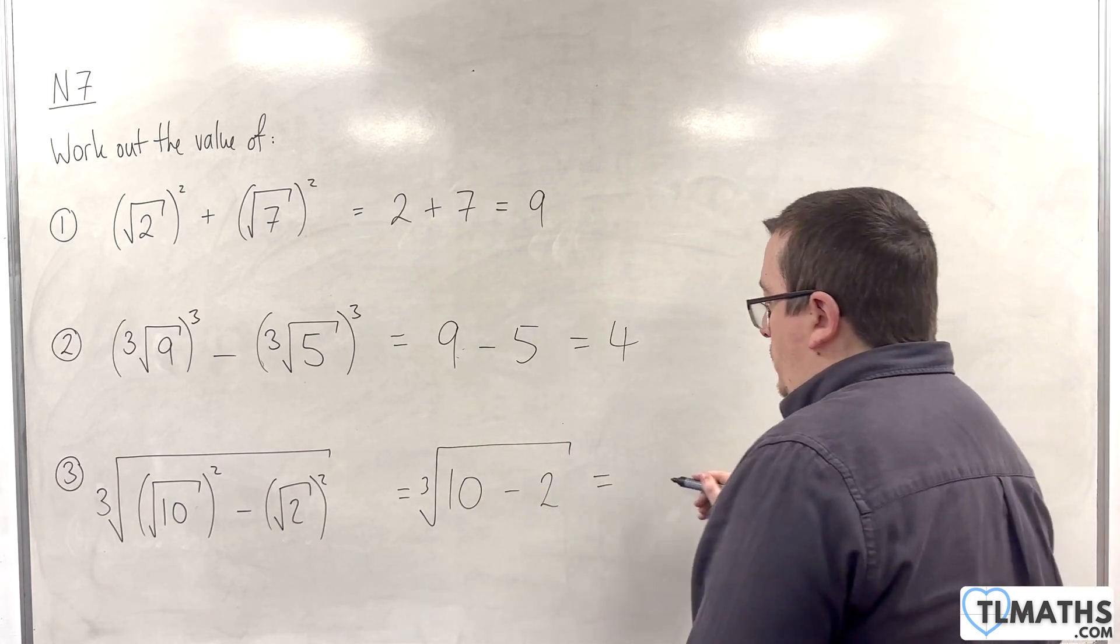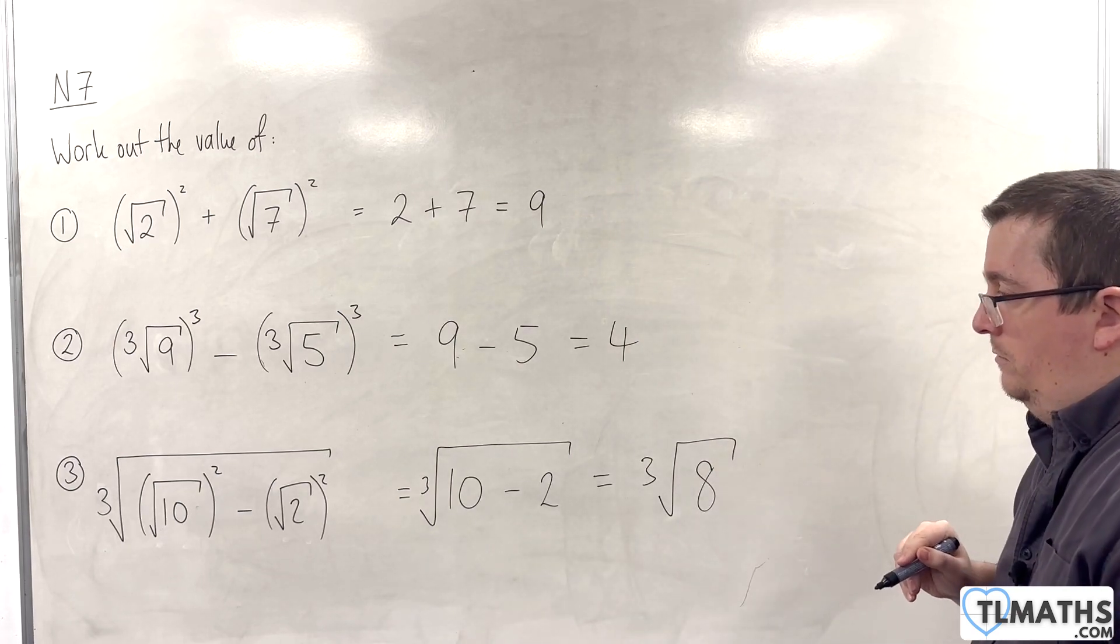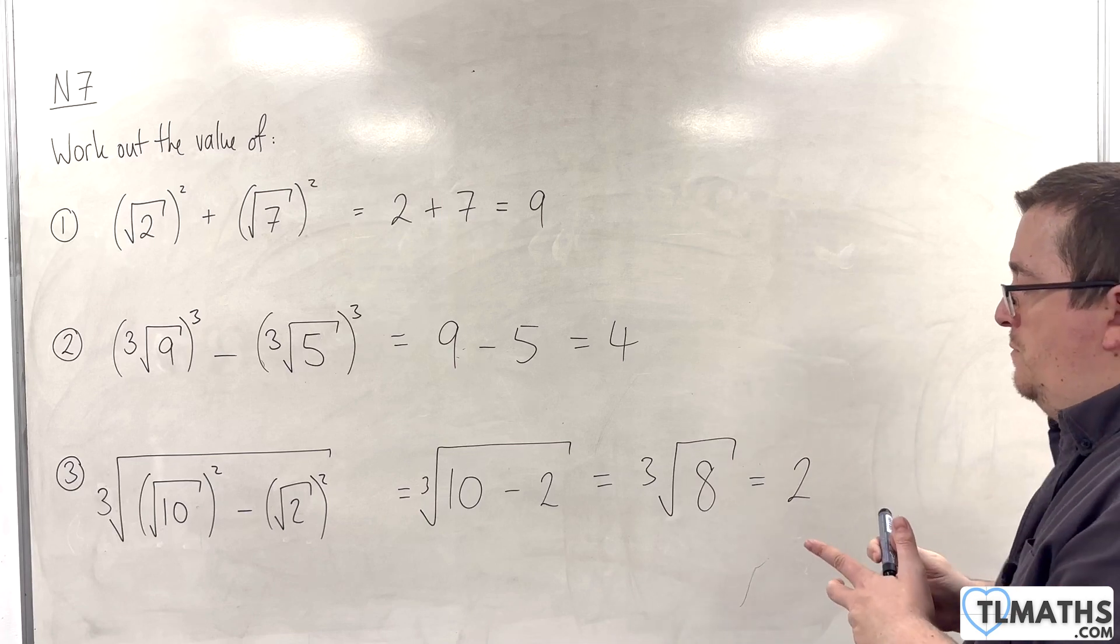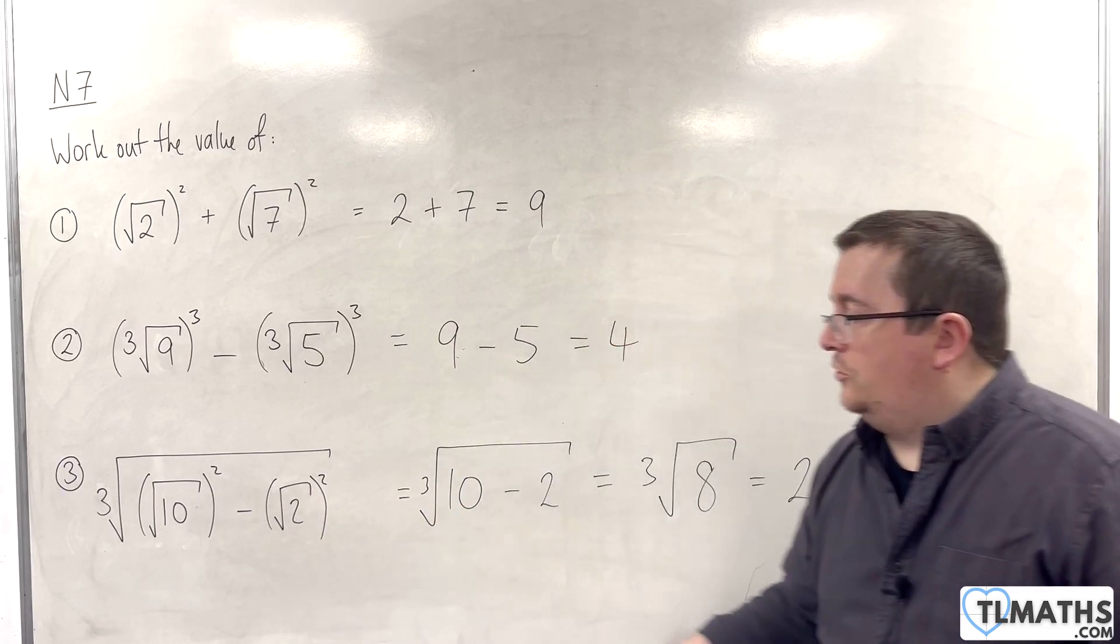10 take away 2 is 8. So, we have the cube root of 8, which 8 is a cube number. It's 2 cubed. So, the cube root of 8 is 2. And so, the result of this is just 2.